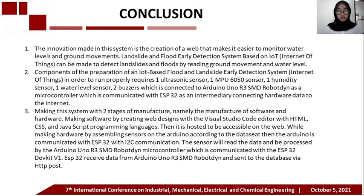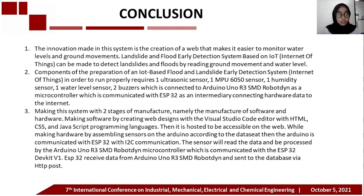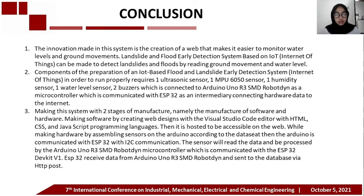For all the explanation, we can conclude: First, the innovation made in this system is the creation of a web that makes it easier to monitor water level and ground movement. The landslide and flood early detection system based on IoT technology can detect landslide and flood by tracking ground movement and water level. Next, the components of the IoT-based flood and landslide early detection system require one ultrasonic sensor, one MPU sensor, one humidity sensor, one water level sensor, and two buzzers connected to Arduino Uno, with ESP32 as the intermediary connecting hardware data to the internet.